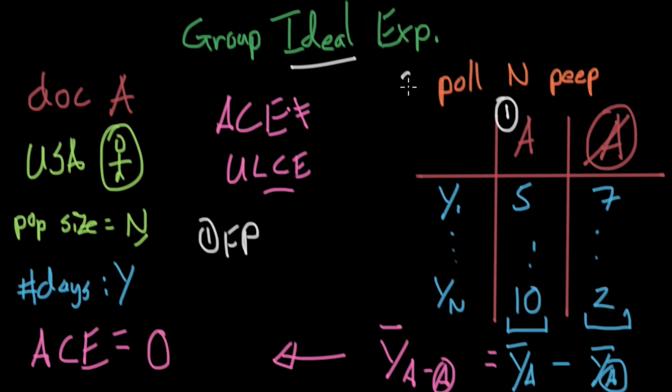Number two is that we can't necessarily poll everyone. We can't poll the entire United States because that's really expensive. So number two is what I call a problem of statistical inference - just plain statistical inference.